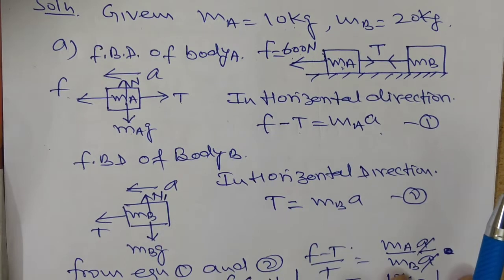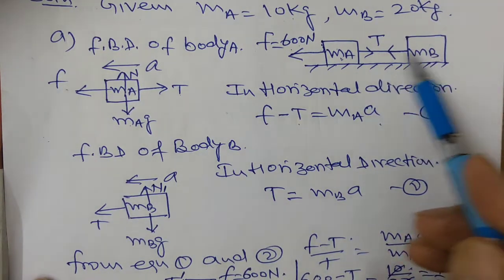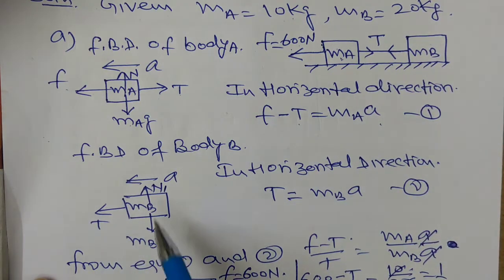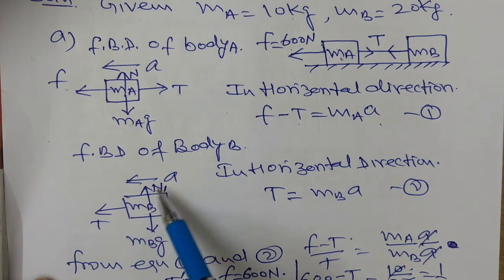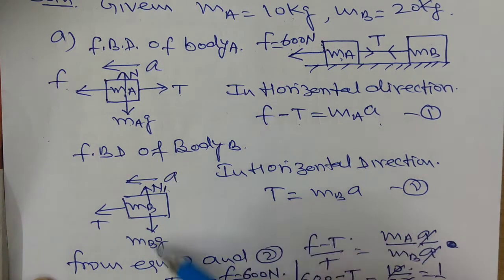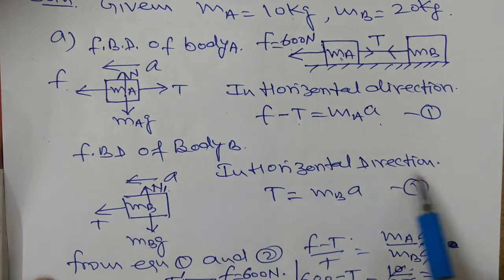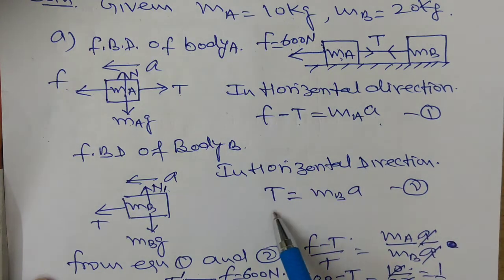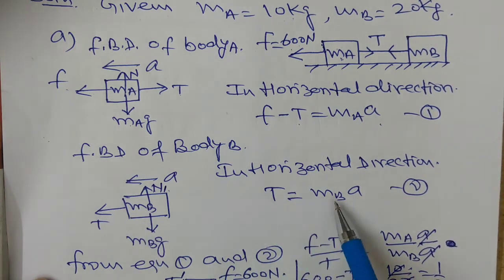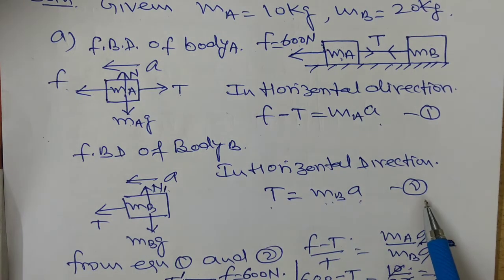In the horizontal direction the body moves, therefore we apply Newton's second law: F net equals MA. Total force on the body equals mass into acceleration. So in the horizontal direction, the net force is F minus T, because the body is moving in this direction, F is greater, and hence net force is F minus T equals MA. This is equation number 1. For body B, the free body diagram shows only tension T acting horizontally, plus weight and normal reaction N-dash. So Newton's second law gives T equals MB into A. This is equation number 2.